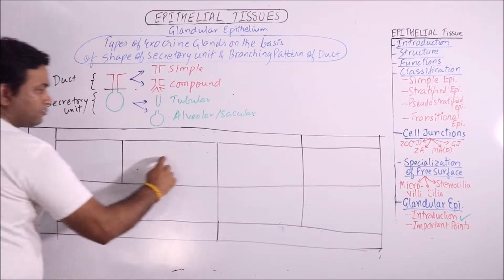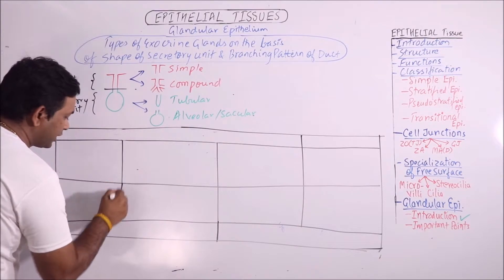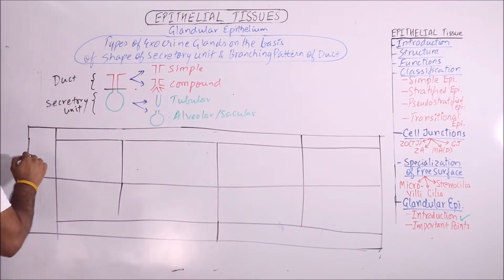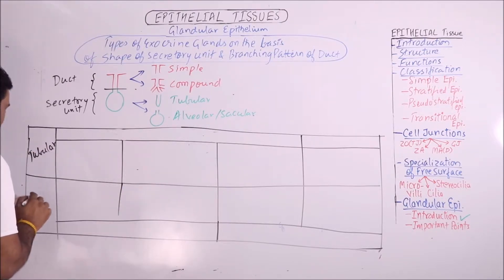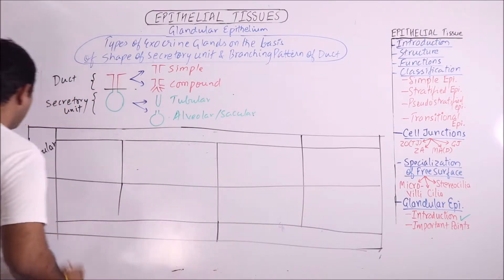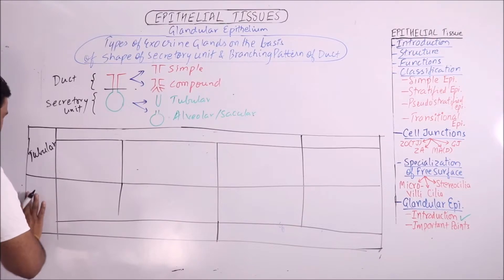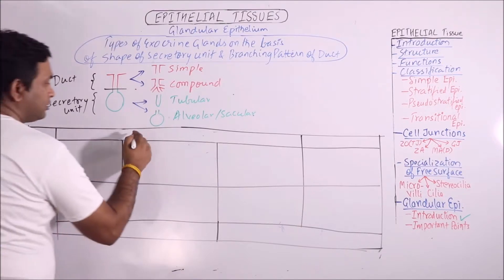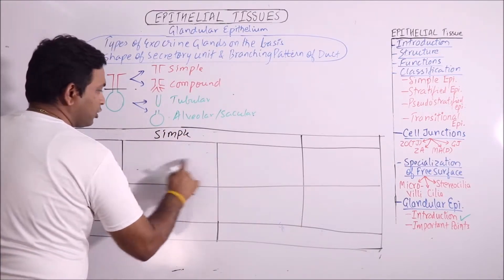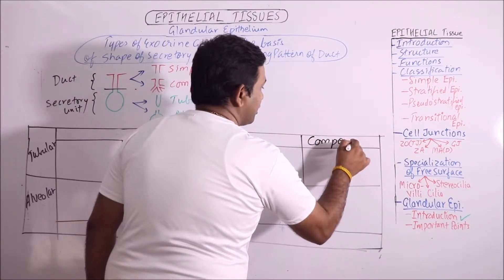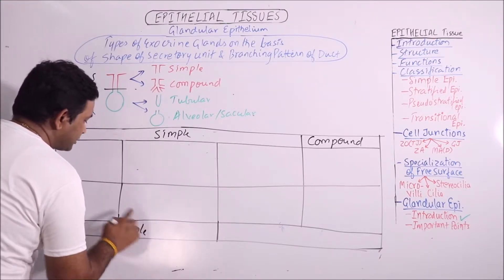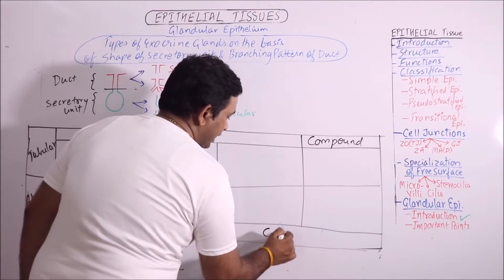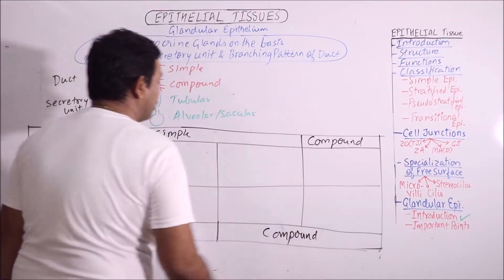In this classification table, there are four types in the first row and another four types in the second row. In the first row, the secretory unit is tubular, and in the second row, the secretory unit is alveolar. The duct system is simple for the first three and compound for the last one in the tubular row, while simple duct system is for the first two and compound for the last two in the alveolar row.